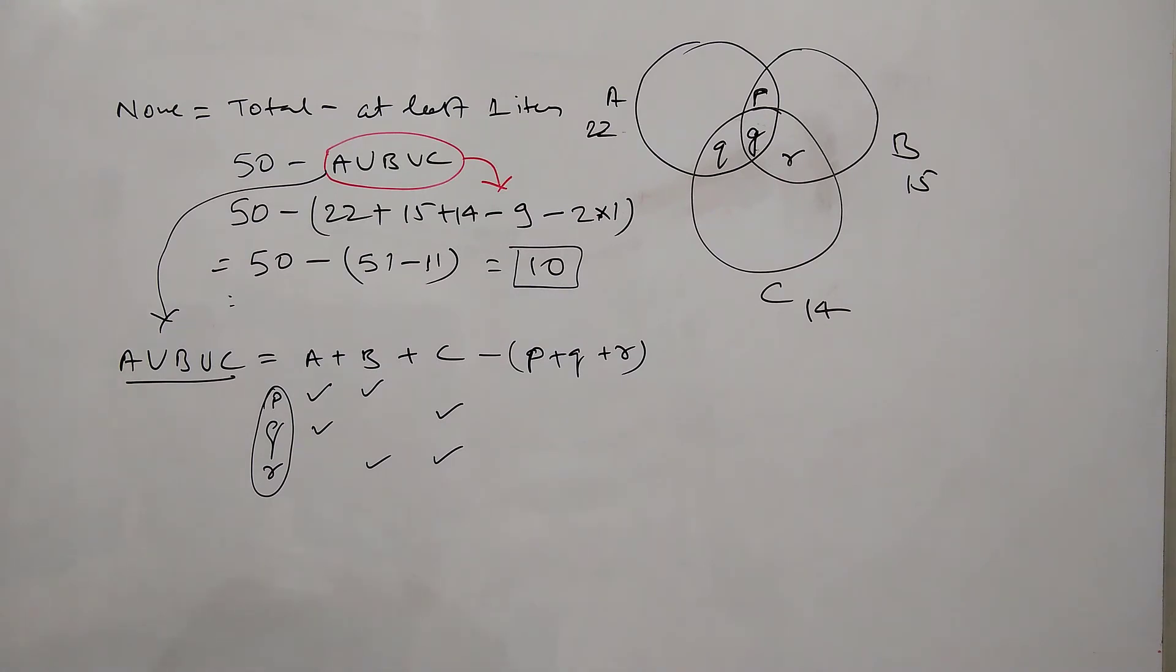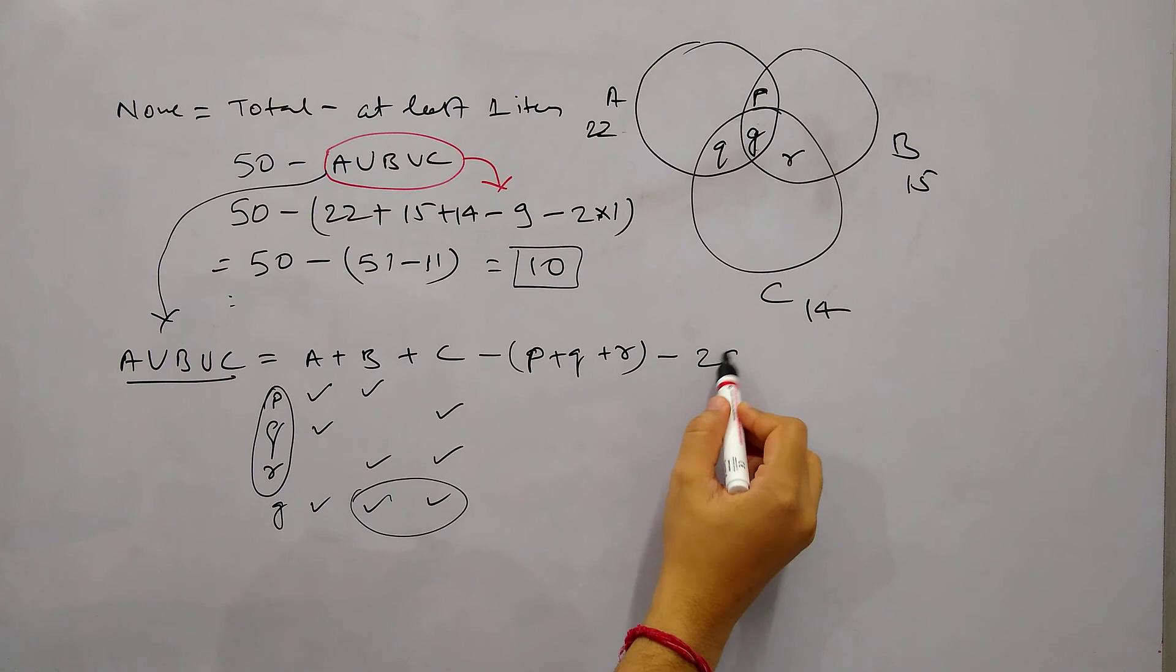Good so far. And now if you see G which is in center, this G is getting counted in A, B, C, all three. So when we are adding A, B, C, G is getting added thrice. So when this is getting added thrice we need to remove two occurrences of G. So from this expression we need to remove 2G. So if we remove 2G just one occurrence will get counted.